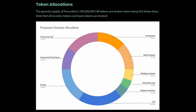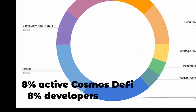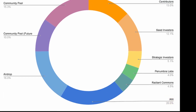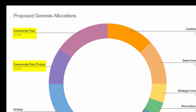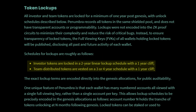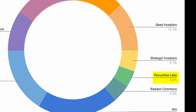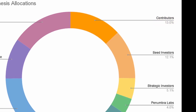In total, there will be 100 million UM tokens. The 16% UM airdrop is evenly distributed between interchain developers and users, and will be directly available. 20% is allocated to the foundation for supporting the Penumbra protocol through grants. 25% is in the community pool and controlled by the DAO. Tokens for investors and the development team are locked for a minimum of one year up to four years, including 4.5% for Radiant Commons, 3.65% for Penumbra Labs, 12.5% for contributors, and 17.2% for various investors.